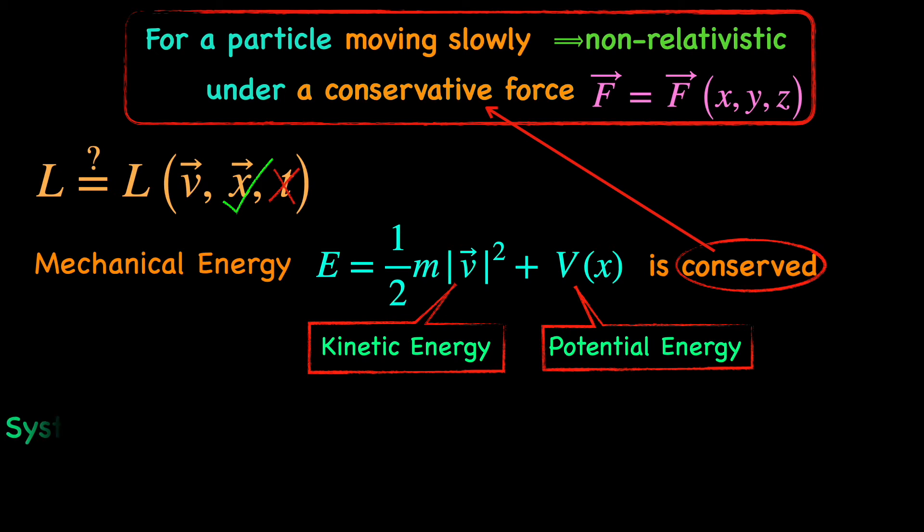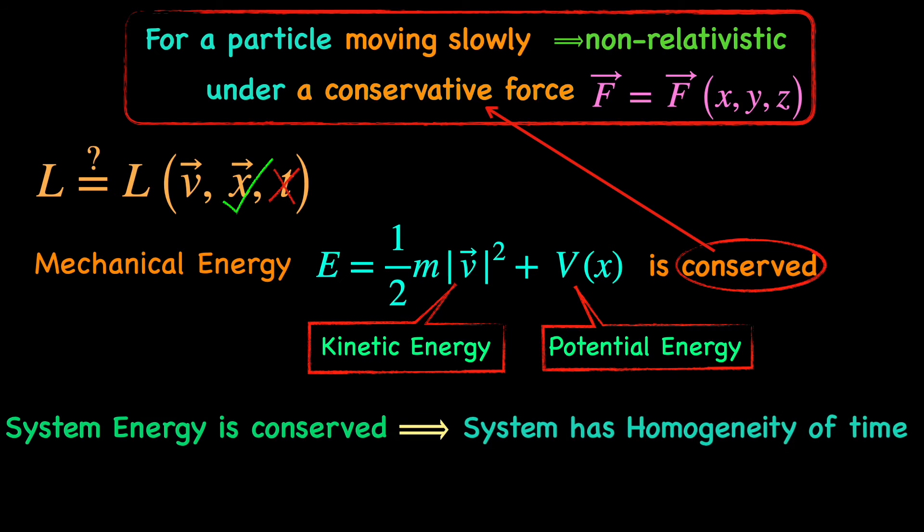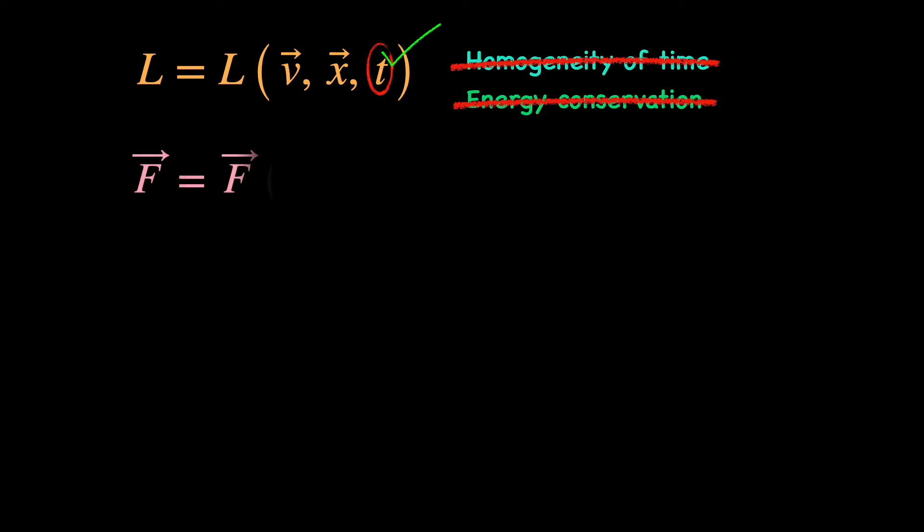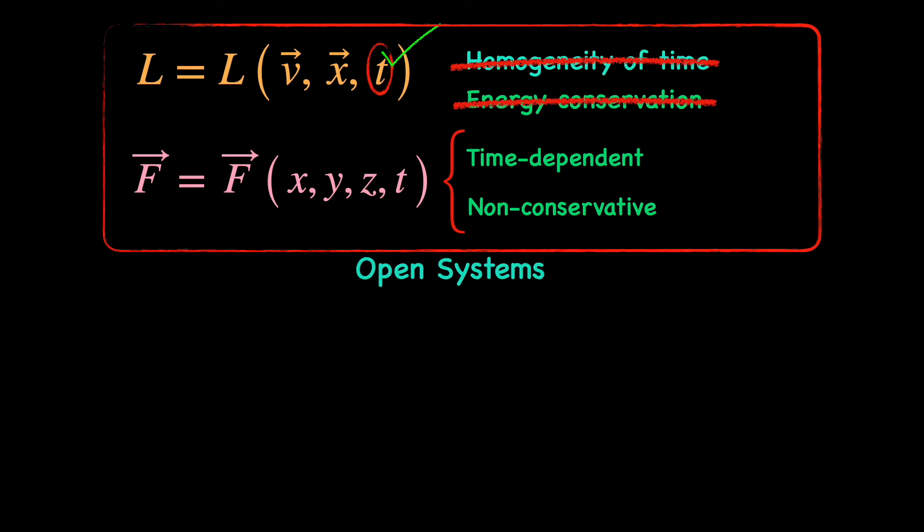In general, we can say that any conservative system with conserved mechanical energy needs to have a symmetry called the homogeneity of time which ensures that the Lagrangian of such a system cannot have explicit time dependence. So, that answers our question about the explicit time dependence of a Lagrangian of a conservative system. Now, to be honest there are mechanical systems where the Lagrangian has explicit time dependence. So, no homogeneity of time and no conservation of mechanical energy. But in such cases the force involved will be time dependent, therefore non-conservative. Such systems are called open systems. But that's the story for some other time.